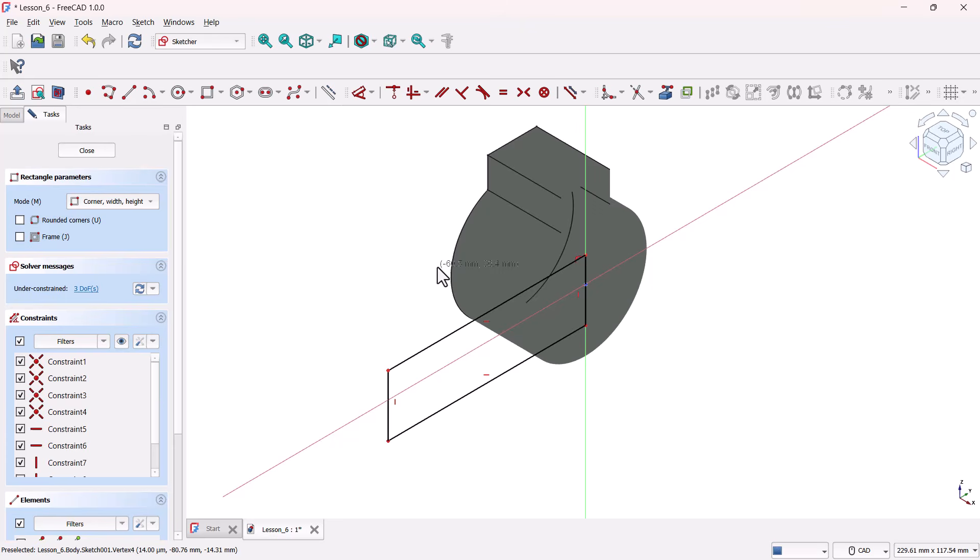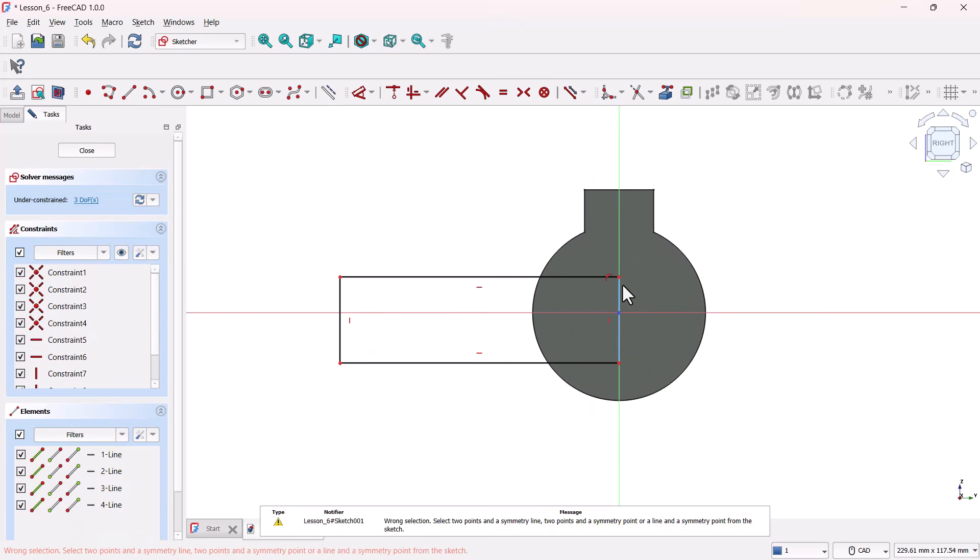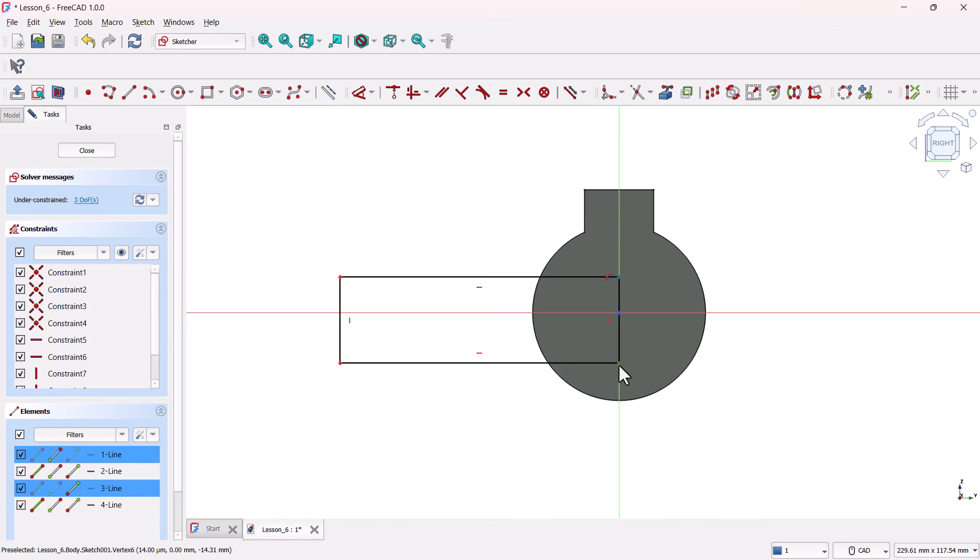Next, let's make this handle symmetric. Select these two endpoints in the vertical axis, hold Ctrl to multi-select, then apply the Symmetrical constraint. This locks the rectangle evenly around the Y-axis.